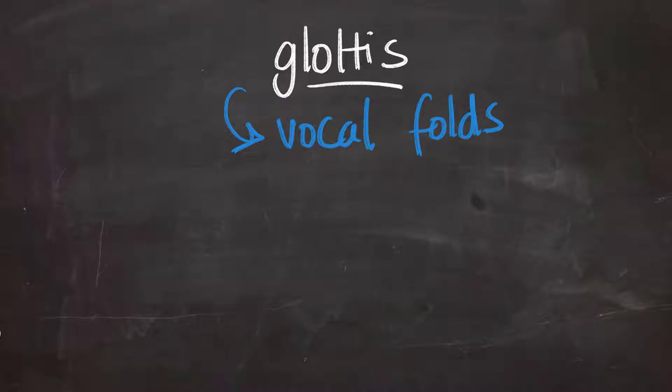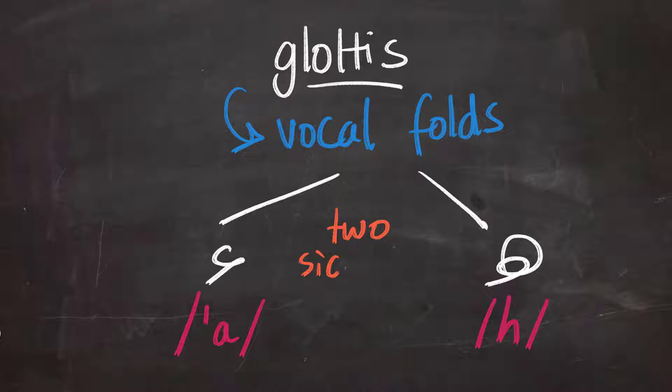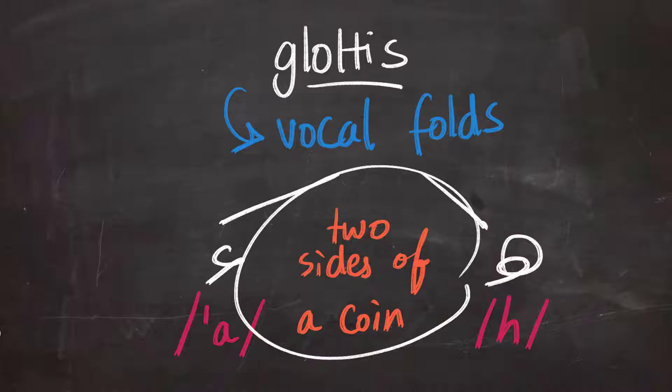They come in the letters H and Hamza. And these two letters produce the sounds H and A. These two letters are very much connected because they are produced in the same place. And they are actually two sides of the same coin.